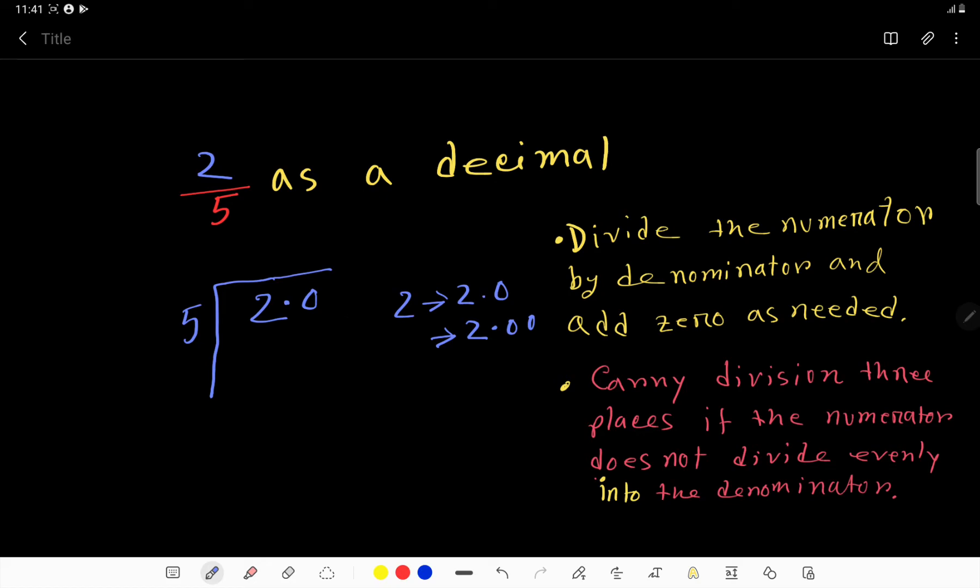5 goes into 2 how many times? 0 times, since 2 is smaller than 5. 0 times 5 is 0. If you subtract, you get 2. Bring down the 0, and the decimal point must come to the quotient side. So now 5 goes into 20 how many times?